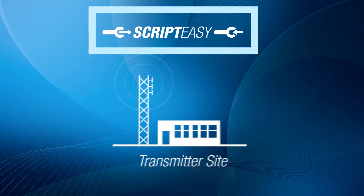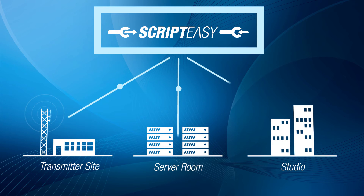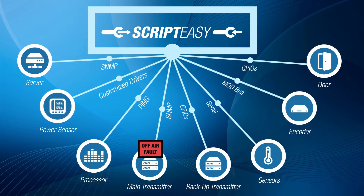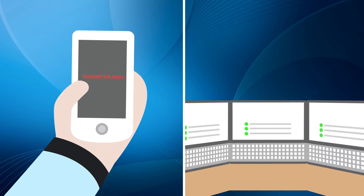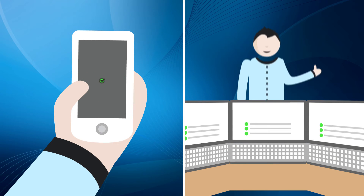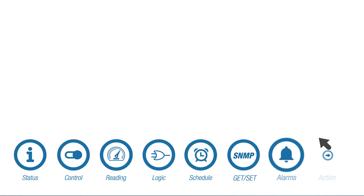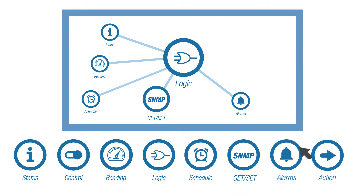Script Easy makes it easy to coordinate actions and share data between sites. Automatic corrective actions can help put a site back in operation even before engineering staff have a chance to respond, ensuring maximum uptime.